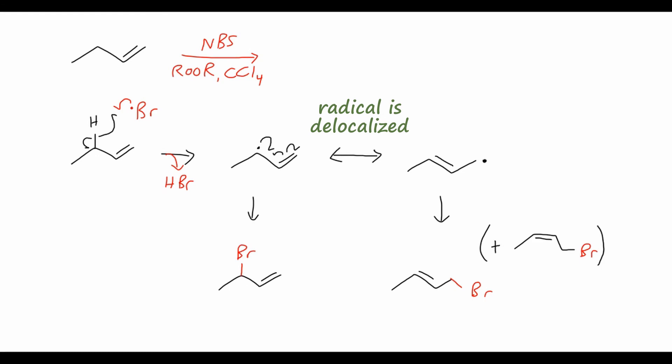So when performing these types of allylic halogenations, it's important to realize that our charge or our radical is going to be delocalized throughout several carbons, so in many cases that can lead to a mixture of products. One last thing I want to mention is allylic substitutions.